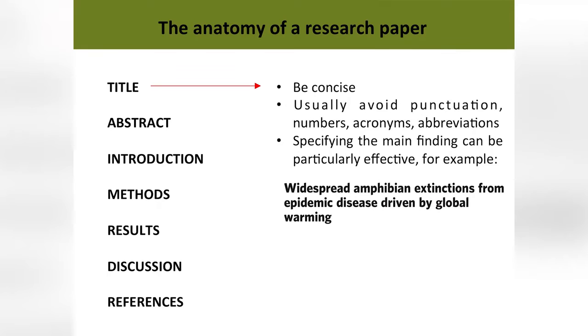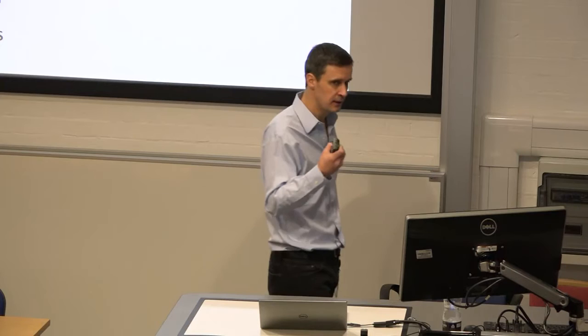So the anatomy, if you like, of a research paper. I'm going to go through the main sections that we would expect to usually find. It's fairly standard — not always, but it's a very strong guidance that you should be using these general sections. You need a title, of course. Be concise. Usually avoid punctuation — you'll often see semicolons, which is fine, but where you can, avoid punctuation in titles. Avoid numbers, avoid acronyms, avoid abbreviations. One really good approach is to try and specify the main finding — really what your paper says, what the take-home message is. For example: 'Widespread amphibian extinctions from an epidemic disease driven by global warming.' No punctuation, it's straightforward, and it tells you concisely what the paper is about and what its main findings are.